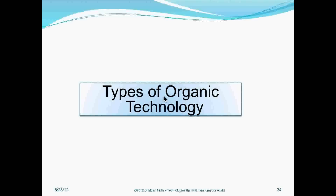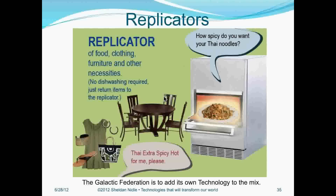So let's look at organic technology — what is it, what does it do, what are the different forms that it comes in? The first one are replicators. Replicators are devices that can consciously turn any form of energy into any physical form that we can use, and that includes food, clothing, furniture, and anything else that you could possibly need, such as housing.